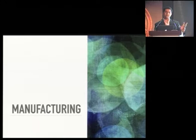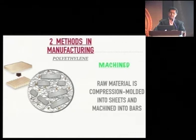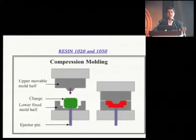Polyethylene is manufactured basically by two ways. The raw material is either compressed and moulded into sheets and machined into bars, or the medical grade polyethylene is made where the resin powder is compressed and moulded into the product we want — into the tibial inserts — and given out.